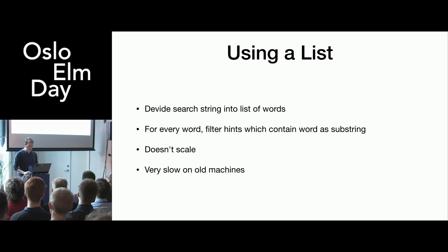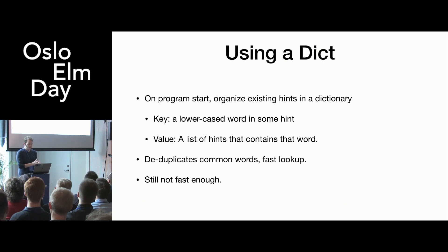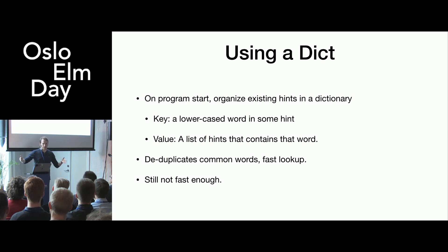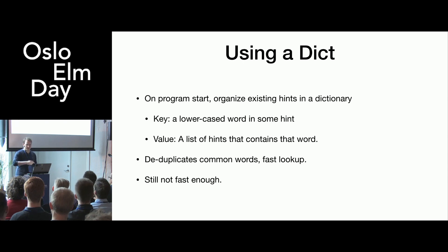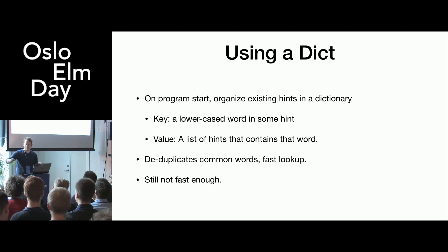Luckily, I know a thing or two about optimizing. My next attempt was to use a dictionary. When the application started, I took all the hints, divided them by words, and created a dictionary where the key was a word and the value was a list of all the hints containing that key. The benefit was that you deduplicated all the common and popular words. So when searching for a substring match you just had to find the matching keys. This was noticeably faster, but in the worst case it could still take a second before you got results.